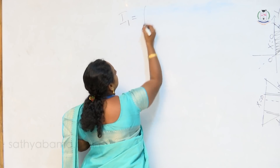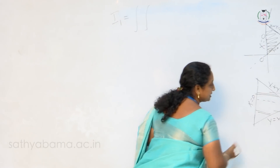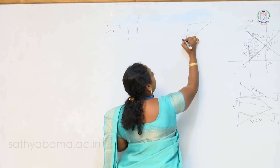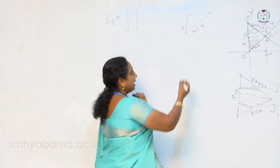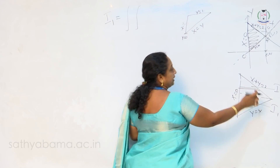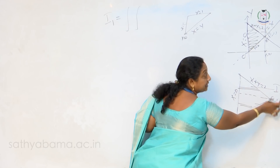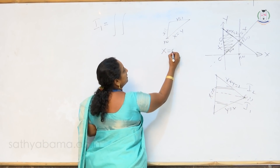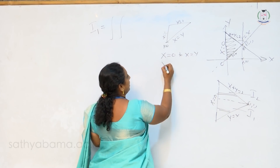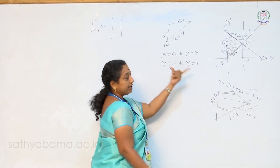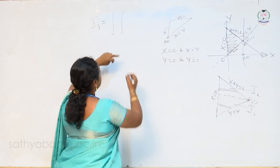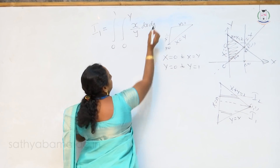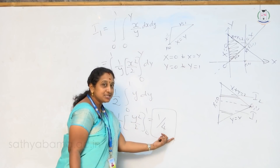For I1, we find the limits parallel to the x axis — writing down the values of x. For I1, x ranges from x is equal to 0 to x is equal to y, and y ranges from y is equal to 0 to y is equal to 1, since the point of intersection is (1,1). Therefore I1 is the double integral from 0 to y (inner) and 0 to 1 (outer) of x by y dx dy. Evaluating, I1 equals 1 by 4.